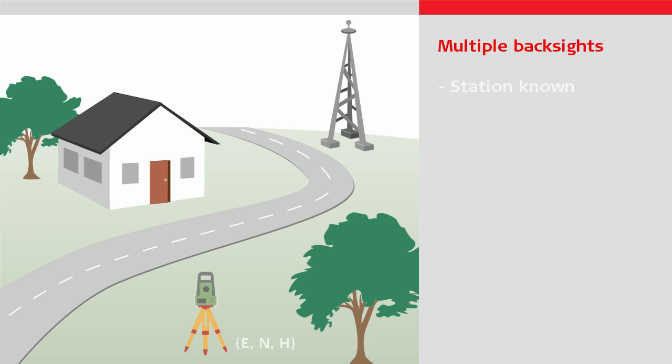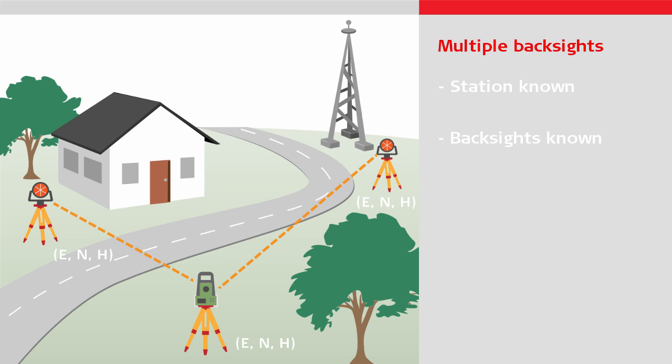Use the multiple back sights method in the following case: if the point over which you will position the total station is known, and the point over which the back sight or back sights is known. Note that in this method it is possible to measure to one or more back sights. If you measure to more than one back sight, then a best fit of all the back sight measurements will be made, which may improve the orientation. Optionally, the height of the setup can be transferred from the back sight measurements.